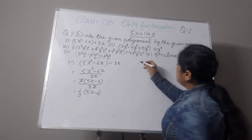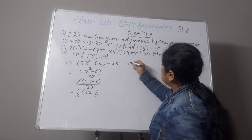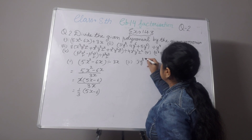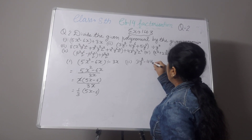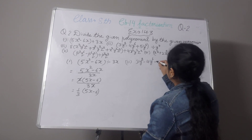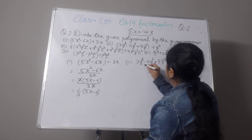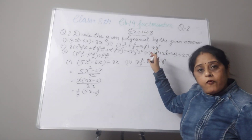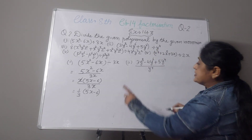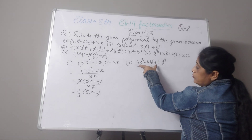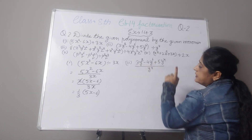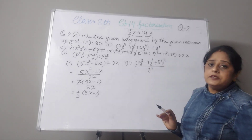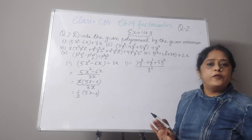Now the second part. This second part is 3y⁸ minus 4y⁶ plus 5y⁴, divided by y⁴. First you have to take common in these three terms. What is common? The maximum y power is 8, then 6, then 4. It means you can take y⁴ as common.